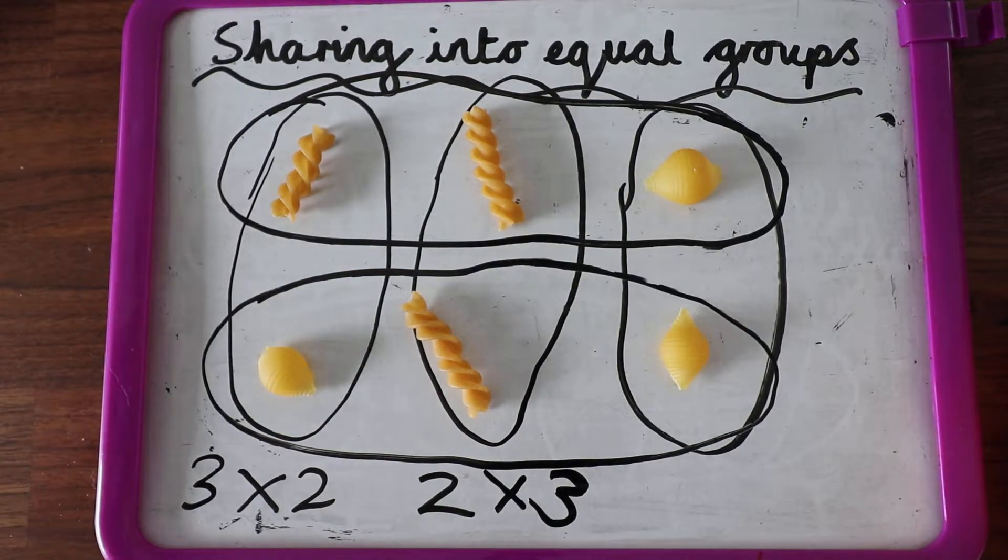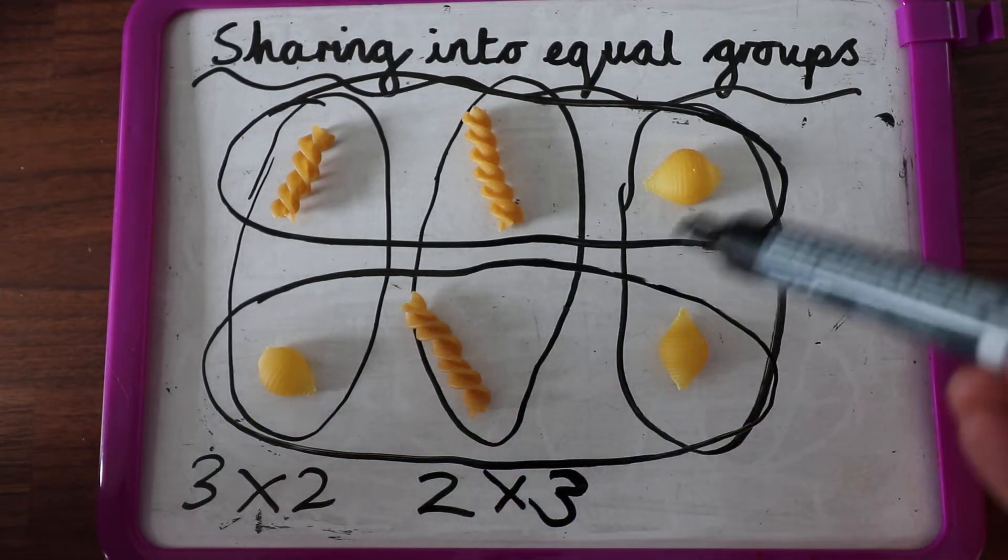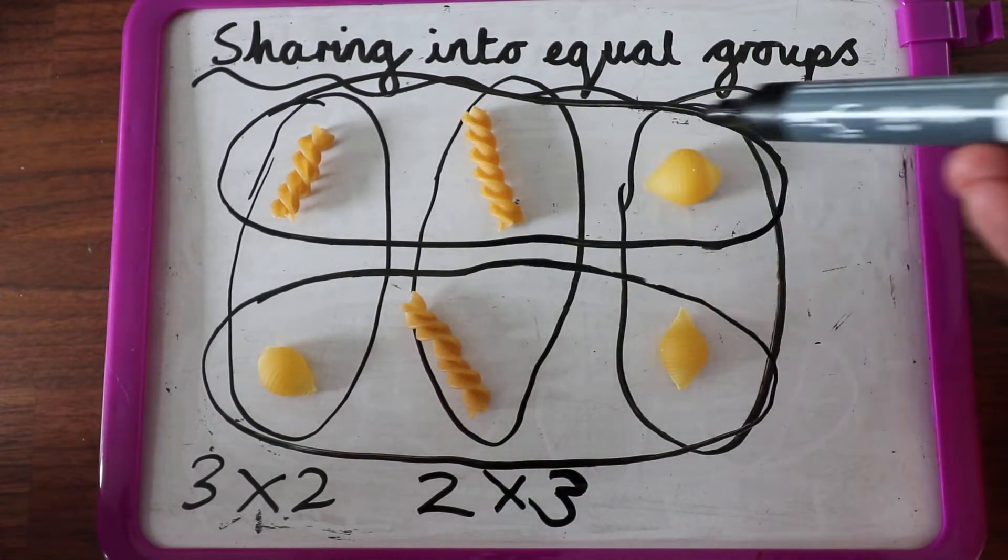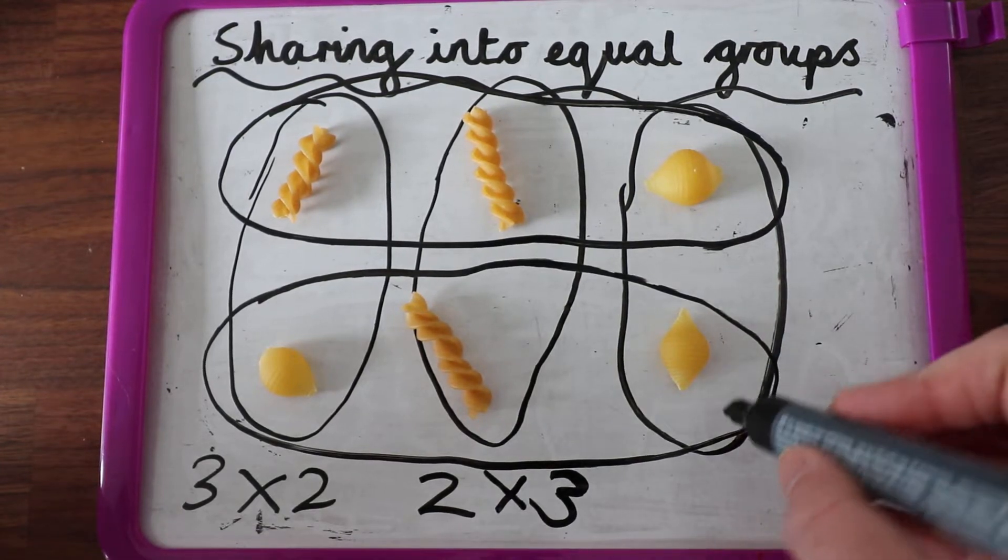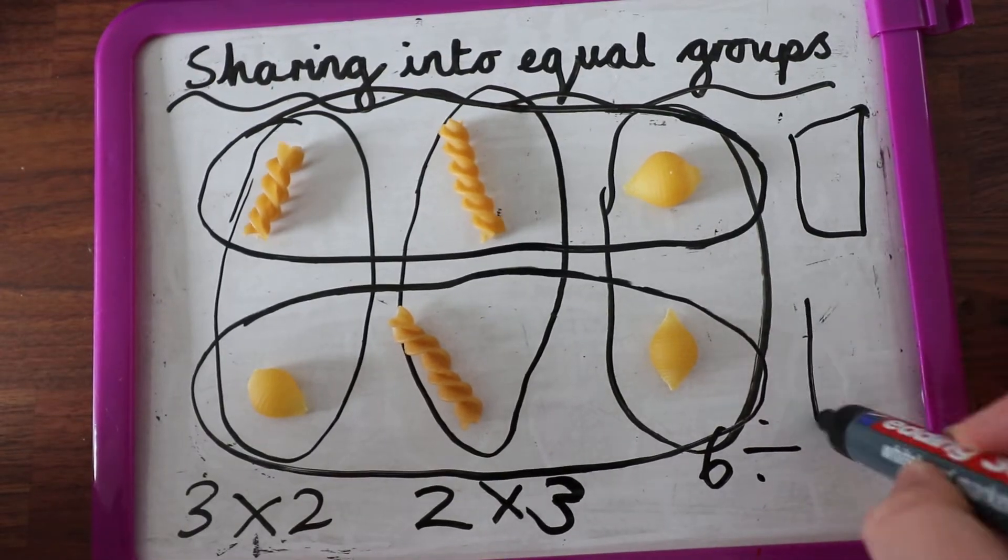So there are my groups and a way to help you into equal groups is I could say, I want to know what is one, two, three, four, five, six. What is six shared into two groups?